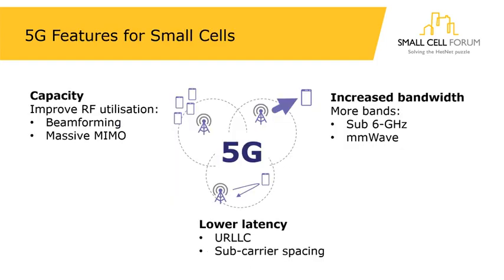Stepping back from the architecture, I want to address what 5G features we're trying to enable and support well in the 5G PHY API. Taking the headline 5G statements, three key ones are applicable to the PHY. First, 5G is going to give us increased capacity, which from a PHY perspective means improving our RF utilization. We have new techniques — massive MIMO and beamforming. Beamforming in particular can be done in many different ways, so we need to ensure the API supports fairly basic beamforming all the way to quite sophisticated implementations.